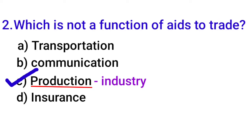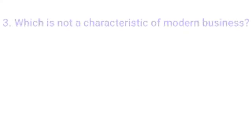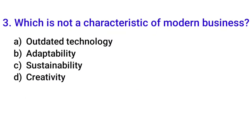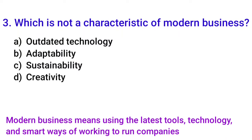The answer to question 2 is option C. Third MCQ: 'Which is not a characteristic of modern business?' Modern business uses latest technology, innovation, and creativity. Something that is NOT a characteristic would be outdated technology — so the answer is option A: outdated technology.